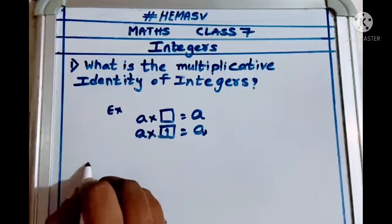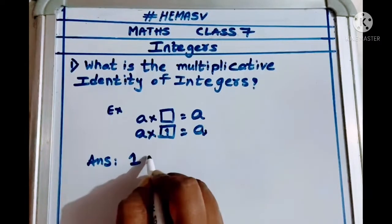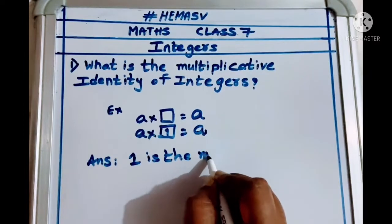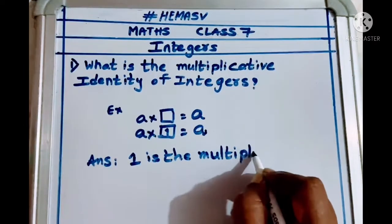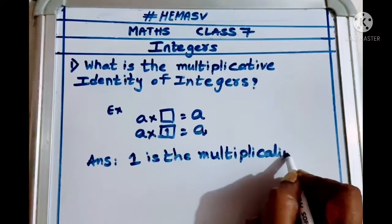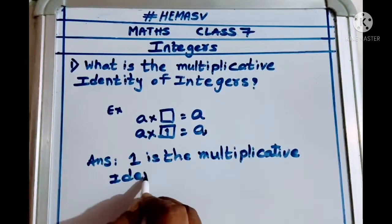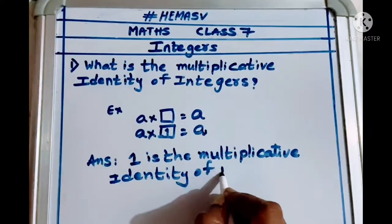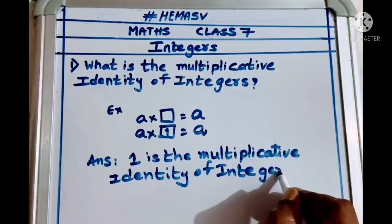So, answer: 1 is the multiplicative identity of integers.